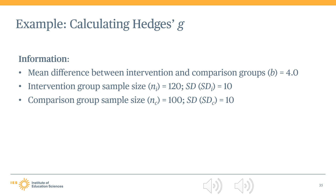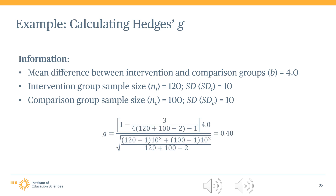The standard deviation is 10 in both groups, the sample size for the intervention group is 120, and the sample size for the comparison group is 100. Plugging these numbers into the Hedges G equation, we find that Hedges G is equal to 0.4 standard deviations, meaning the intervention group average is 0.4 standard deviations larger than that of the comparison group.